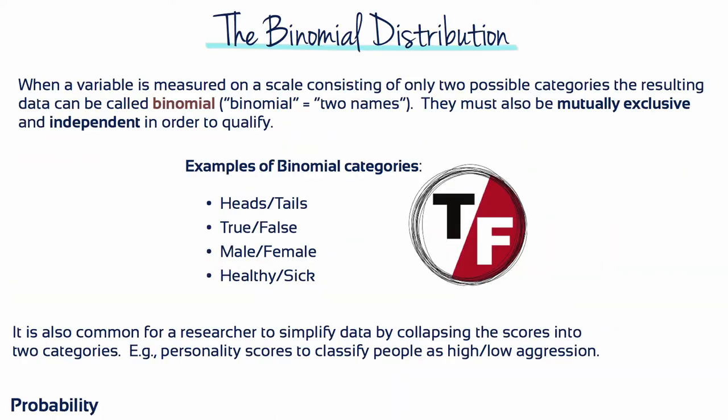When a variable is measured in a scale consisting of exactly two categories, the resulting data are called binomial. The term binomial can be loosely translated as two names, referring to the two categories in the measurement scale.